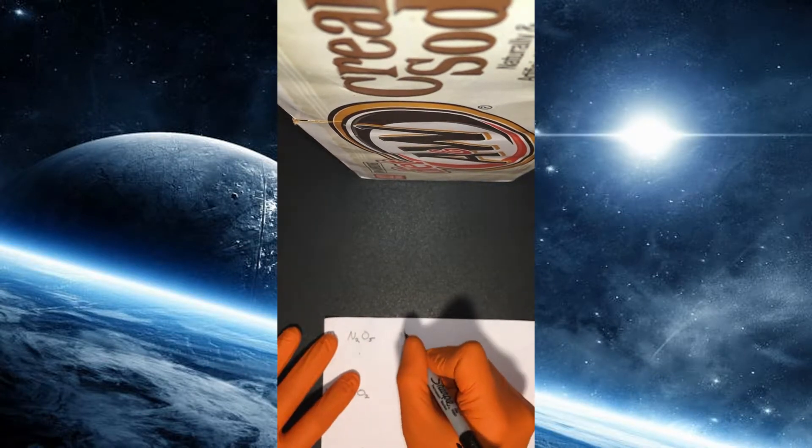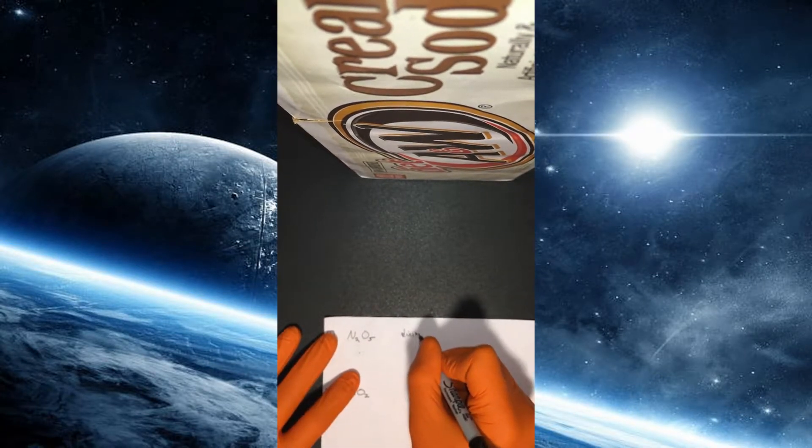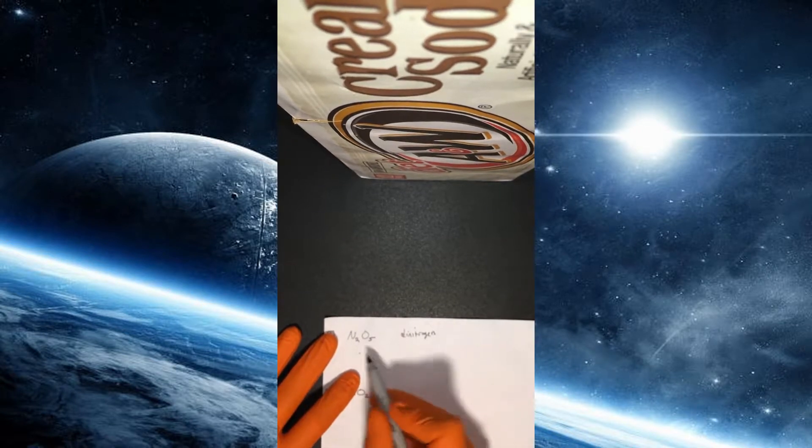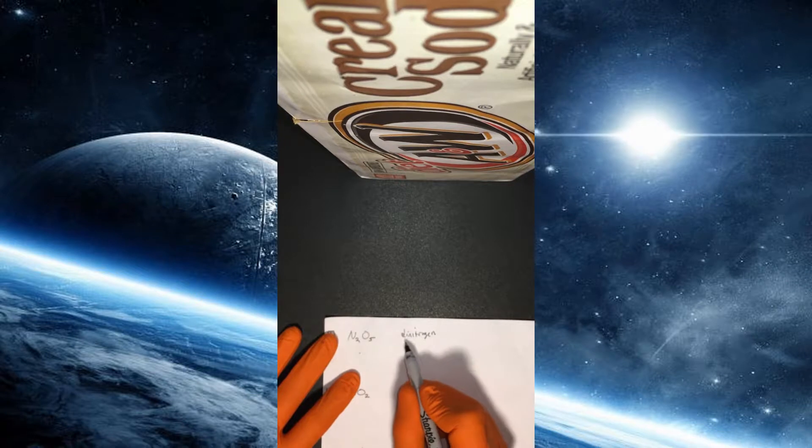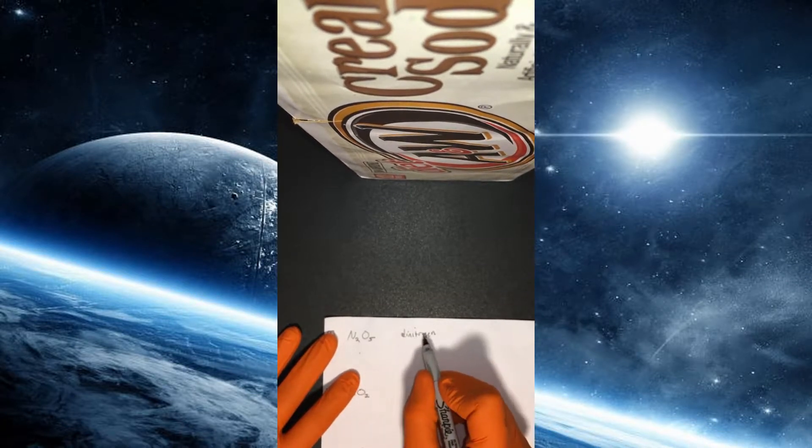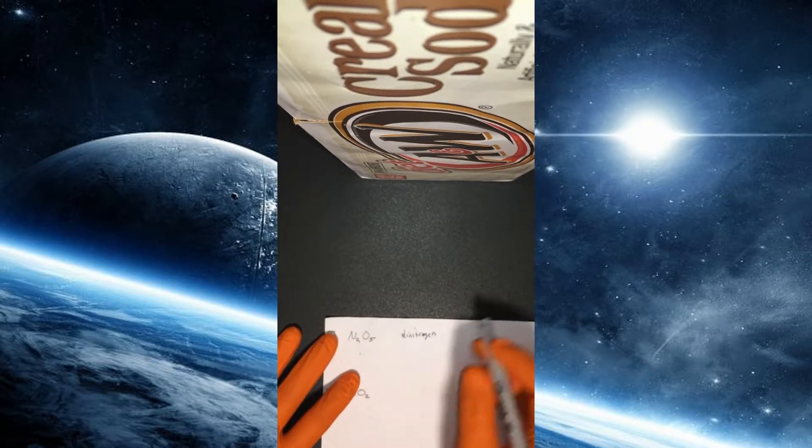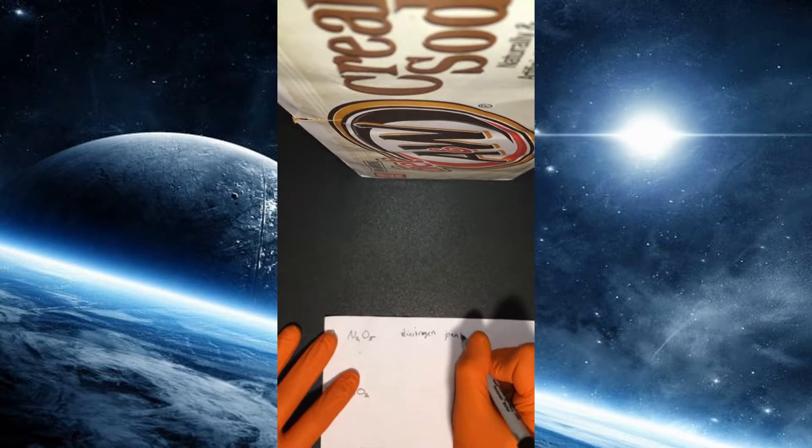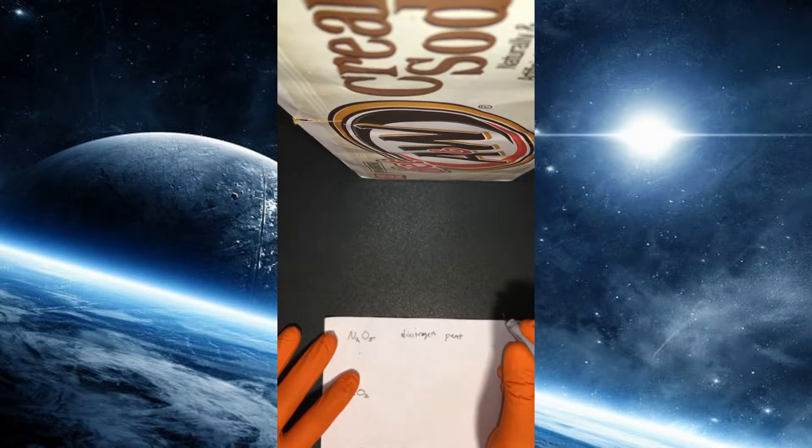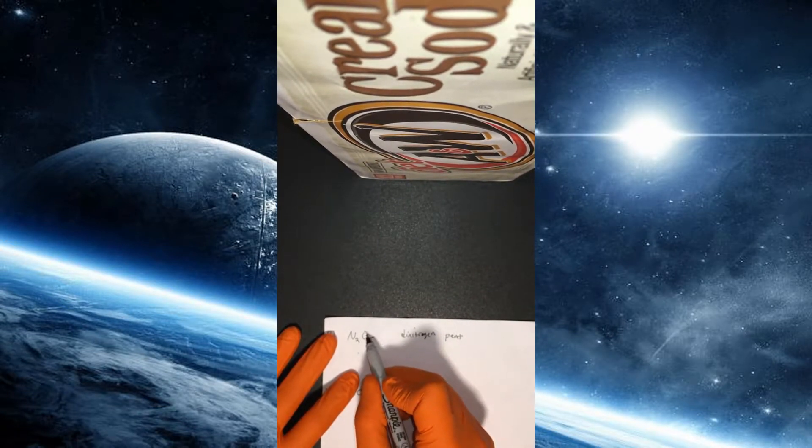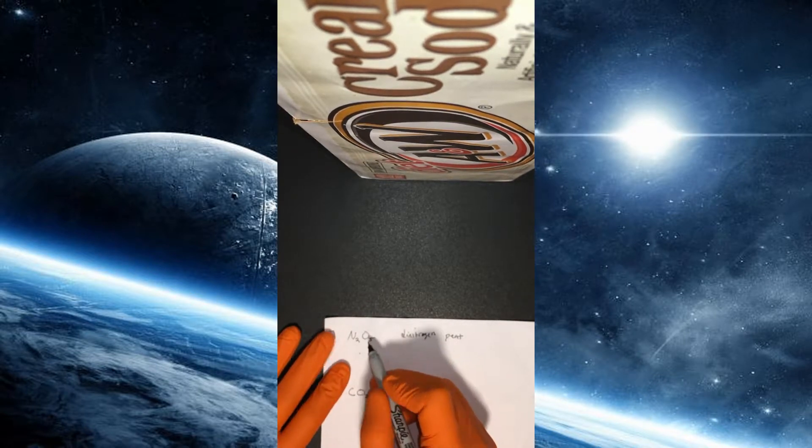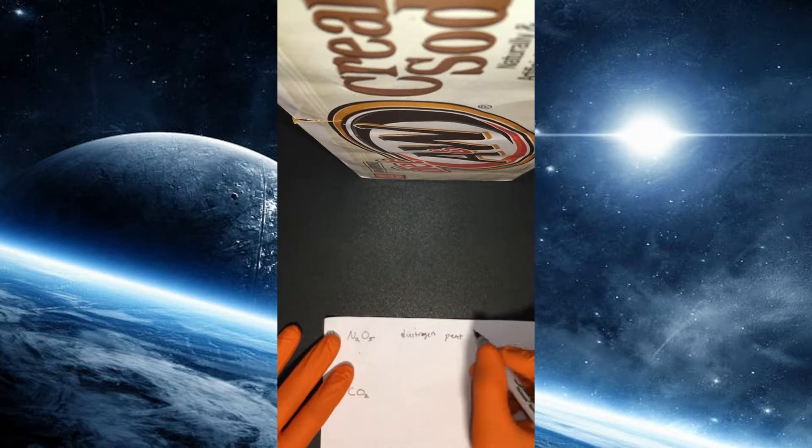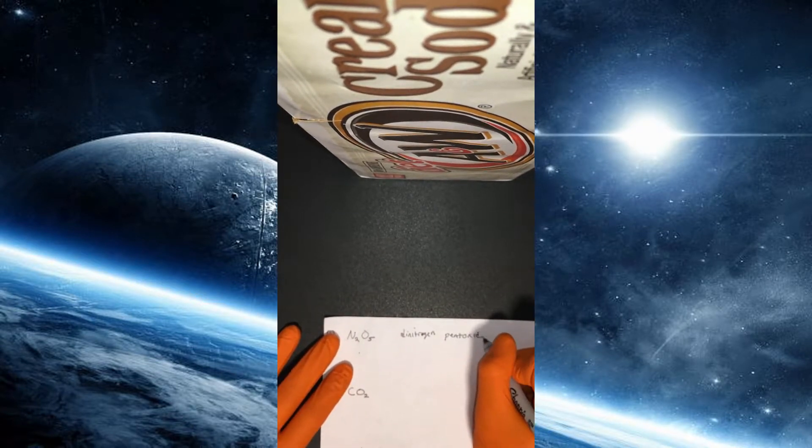So this would be dinitrogen, and remember whenever we name the first element here, we don't change the name of the element. We do put the di in front of it because there's two of them, but we keep it as nitrogen. However, for the second one we still need the prefix for five, which is pent or penta, and we have to change the second element to its anionic name. So it wouldn't be oxygen, it would be oxide. So we'd have dinitrogen pentoxide.